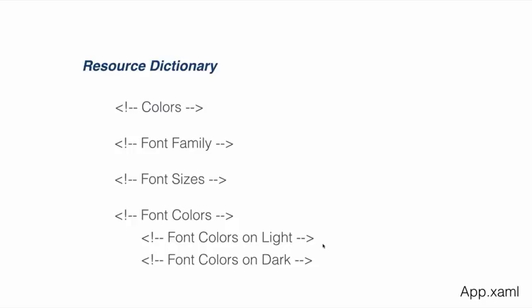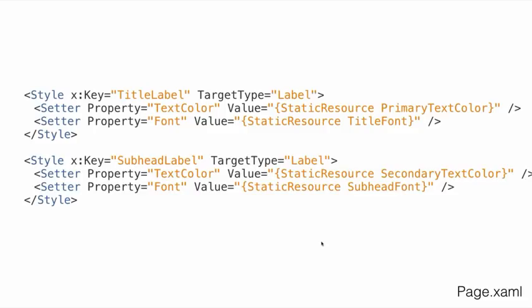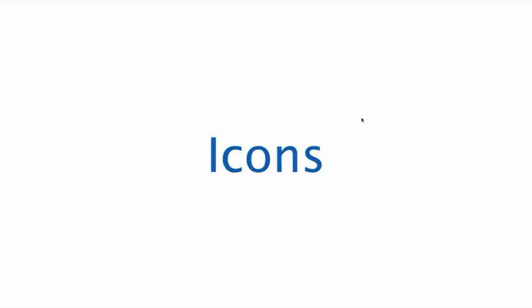We can start creating styles that combine all of these things together. So if we have the title label style for a text cell, and the subhead style for the subhead, we just pick the primary text color for text color and the title font for the font. That one style includes font size, font family, and color.